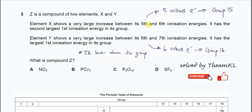Question 3. Z is a compound of two elements X and Y. Element X shows a very large increase between the 5th and 6th ionization energy. This tells us that element X has 5 valence electrons because there is a big jump from the 5th to 6th, so it means it's a Group 15 element.